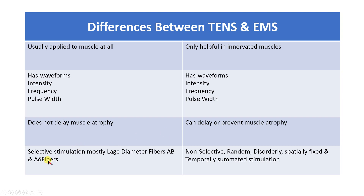TENS selectively stimulates large diameter fibers — such as A-alpha fibers, A-beta fibers, and A-delta fibers — and can sometimes also stimulate small diameter fibers, which is why it is called selective stimulation. EMS, in contrast, provides non-selective, random, disorderly, spatially fixed, and temporally summated stimulation.